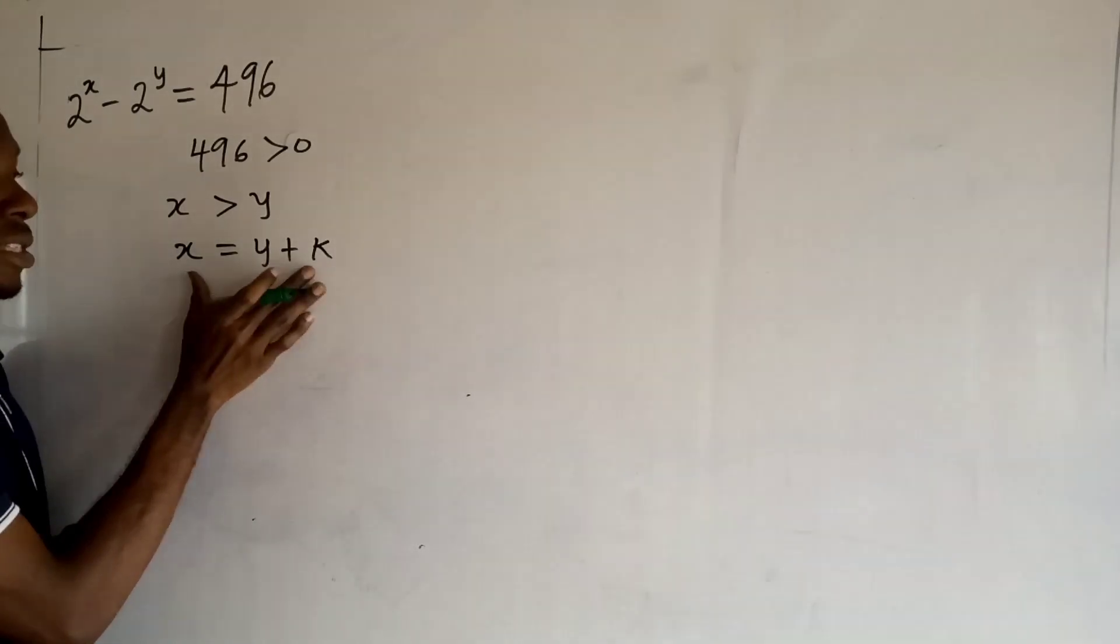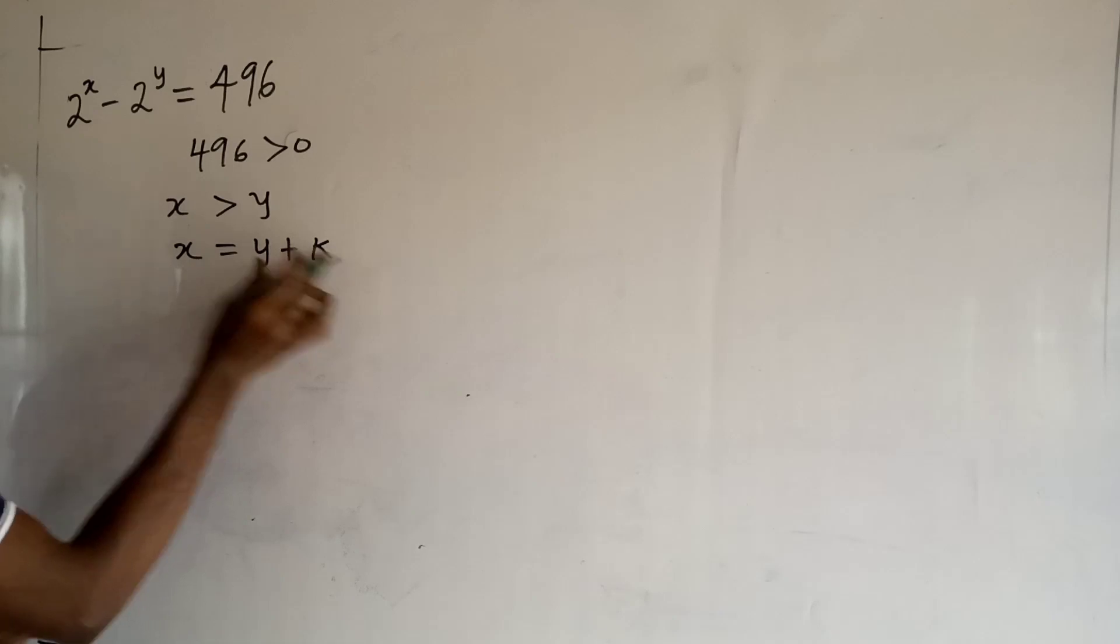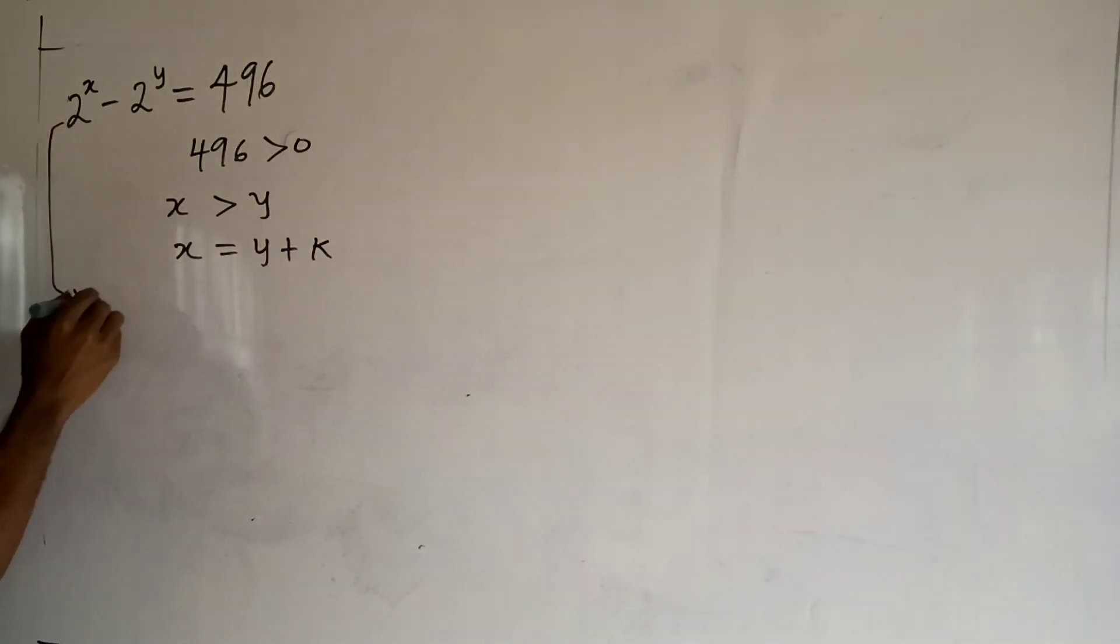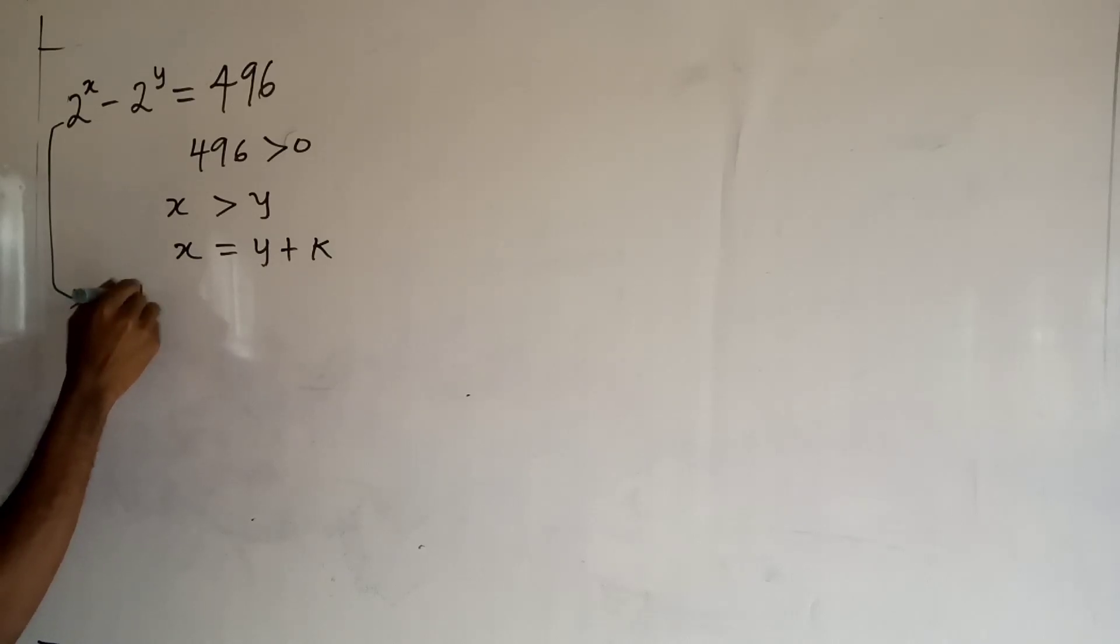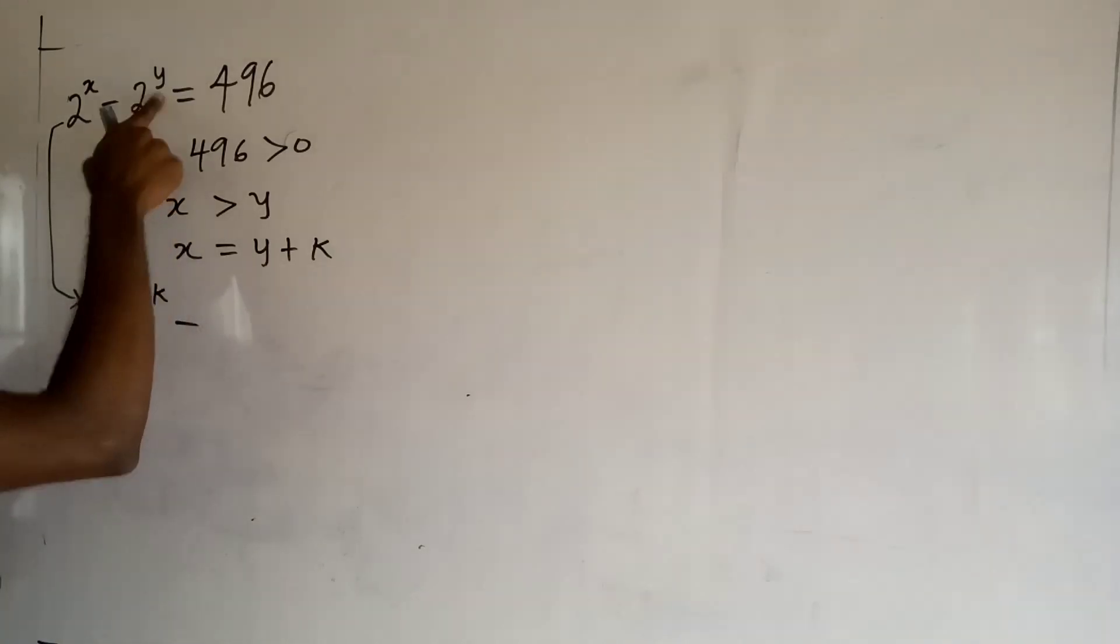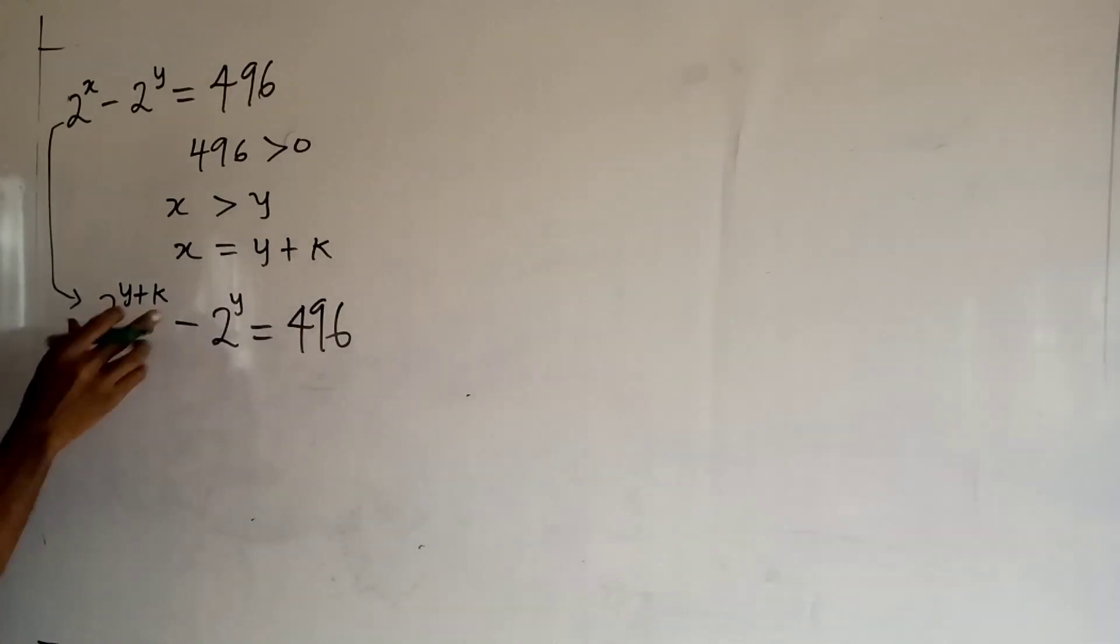Now you can see we have a new relationship for x, so I'm going to rewrite x in this equation as y plus k. So this guy now becomes 2 to the power y plus k minus 2 to the power y is equal to 496.